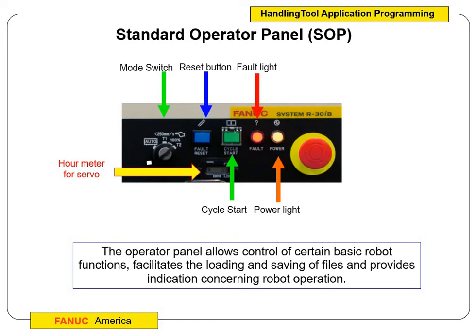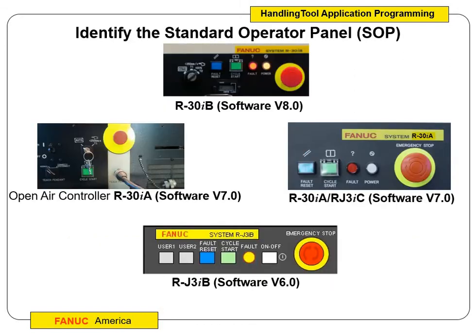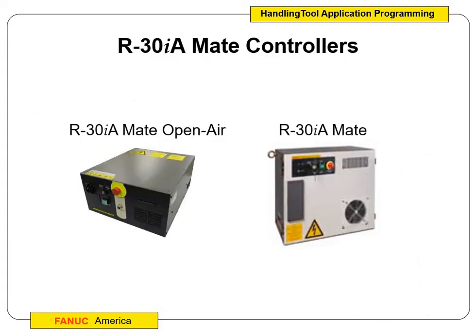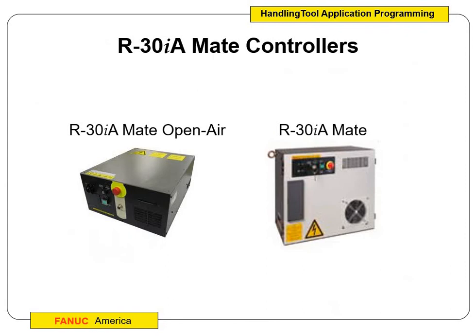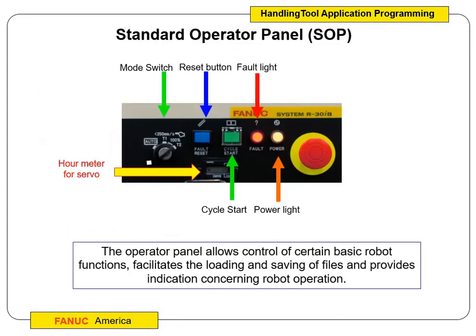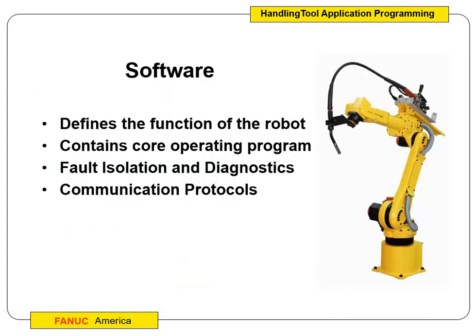The power switch isn't shown on the front panel there — you can see it in the picture of the size A controller in the upper left-hand corner. There's a switch there that we turn the main power on with.